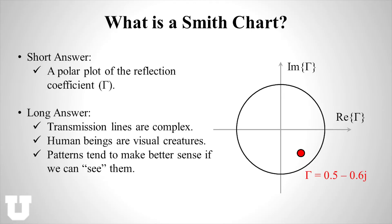So what is the Smith chart really? To answer that, I think it makes sense to think of it in terms of a short answer versus the long answer. The short answer is essentially just a polar plot of a voltage reflection coefficient. You imagine a transmission line is exciting some load and there is a reflection off of that load, and all we're going to do is plot the reflection coefficient somewhere on the complex plane. Everything else on the Smith chart is just bells and whistles on top of that.